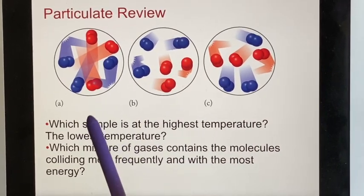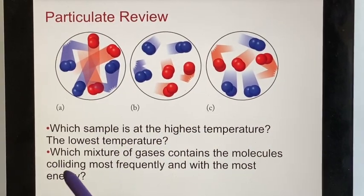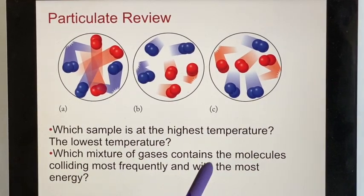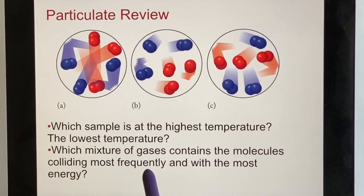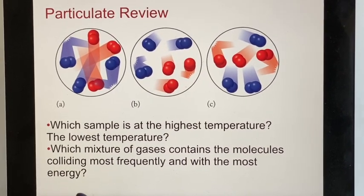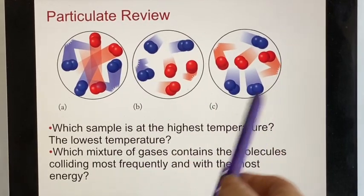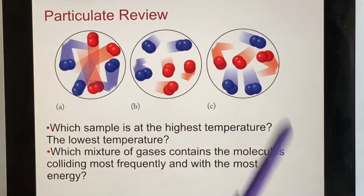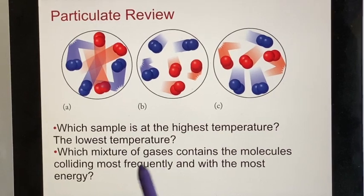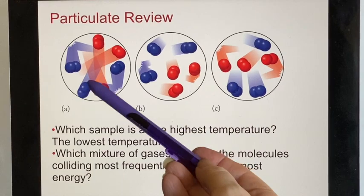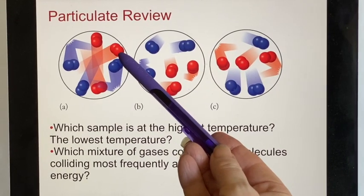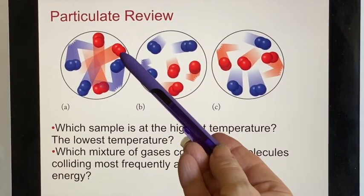And then they ask, which mixture of gases contains the molecules colliding most frequently and with the most energy? As you can see, they're all the same size. They all have the same number of particles. So how often are they going to collide? But if I start thinking about the energy involved, I can see this one has the most energy because it's the same type of particle, but it happens to be moving faster.